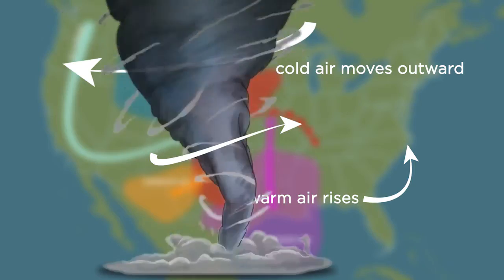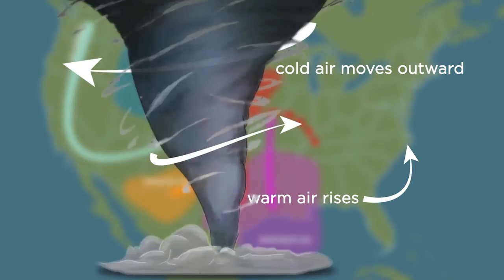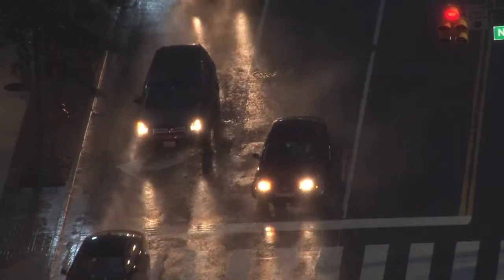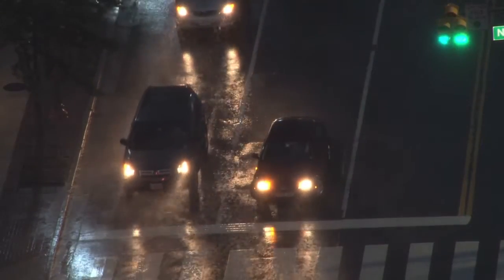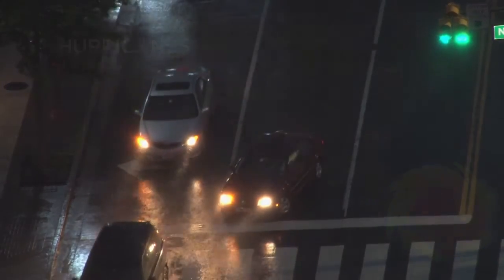Tornadoes are often associated with other types of severe weather, such as thunderstorms and hail. Those events are also triggered by the collision of warm, humid air masses and cold, dry air masses.